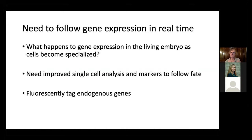To get a better picture of all these processes, we'd like to move away from static images and really look at gene expression in the living embryo as cells become specialized. This requires improved single-cell analysis — single-cell RNA-seq has shown this gradual segregation during early development. But we'd like to fluorescently tag endogenous genes, mostly as fusions, to watch what the protein is doing. Using traditional mouse genetics, this has been slow and painful.